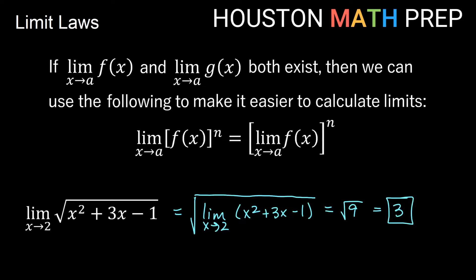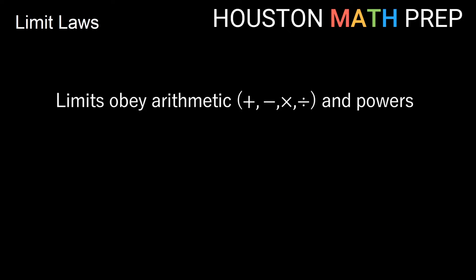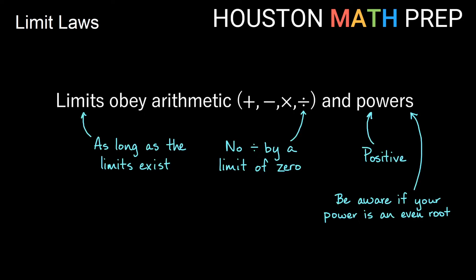The big moral of the story is that limits obey arithmetic — add, subtract, multiply, and divide. A couple of caveats: the limits need to exist, there can be no divide by zero, and with powers we need to be aware of even roots of negative numbers, like square roots or fourth roots, which may be undefined. Just be careful with these special cases.